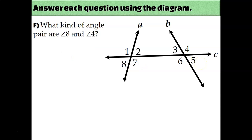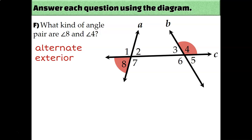What kind of angle pair are angle 8 and angle 4? They are on opposite sides of the transversal — angle 8 is below and angle 4 is above — so that makes them alternate. And they're on the outside of lines A and B, which makes them exterior. So angle 8 and angle 4 are an alternate exterior angle pair.